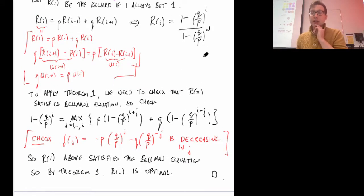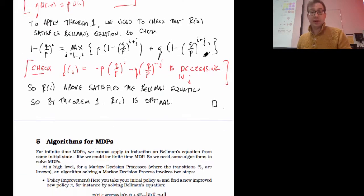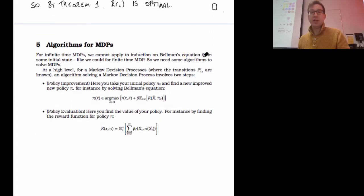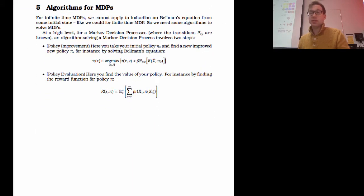So now I want to go about methods for solving Markov decision processes. If you've got an infinite time Markov decision process, here I've just stated what the answer is and you've checked it. If you actually want to go through some sort of procedure to optimize a Markov decision process, we're going to start to cover algorithms for Markov decision processes.